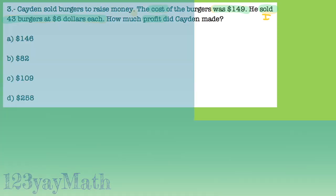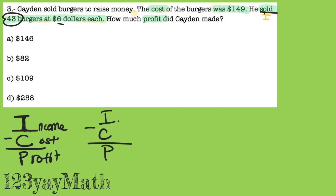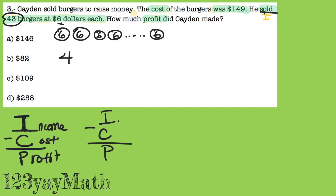The first thing we need to do is find the income, and it's 43 burgers at $6 each. So if I make a drawing: 1 burger $6, burger 2 $6, burger 3 $6, burger 4 $6 — all the way to 43 burgers at $6 each. And what do we do with the repeated addition? Multiply. So we're going to multiply 6 by 43.